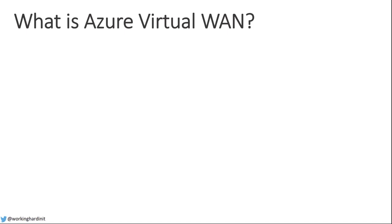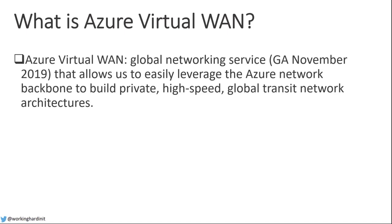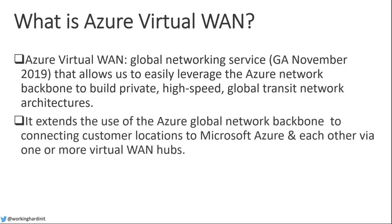So what is Azure Virtual WAN? Basically, it is a global networking service that went GA only last year. It allows you to very easily leverage the Azure network to build your own private high-speed global transit network. You can actually piggyback on it. That network can connect to your on-premises environment, and you could even use it to interconnect different sites, data centers, offices, or even telecommuters and road warriors.